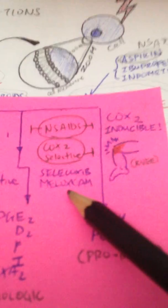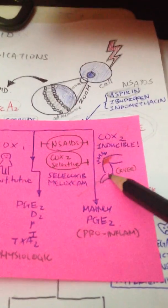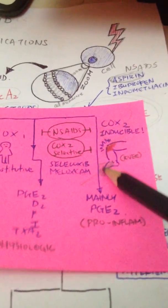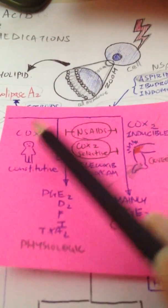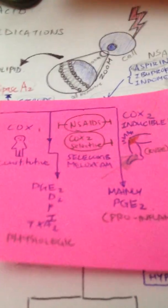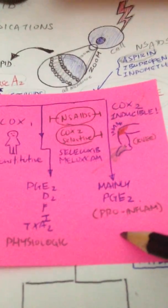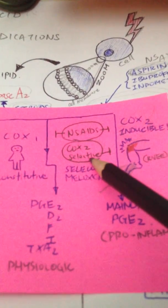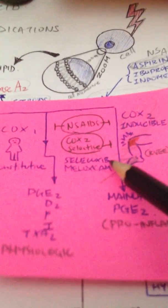The other NSAIDs will act on both COX-1 as well as COX-2. COX-2 is thought to act mainly on inflammation rather than the other parts of COX-1.